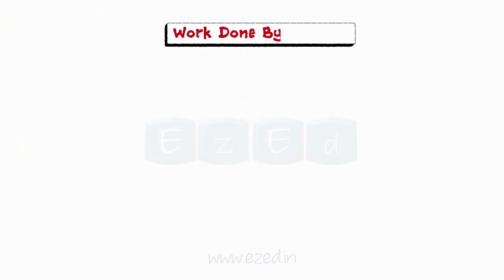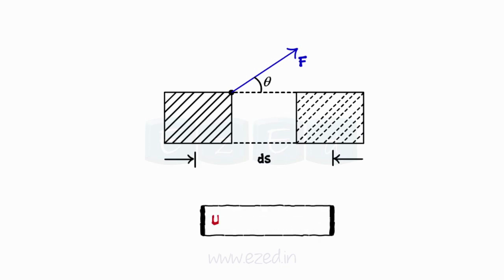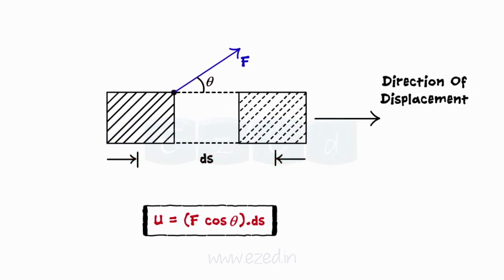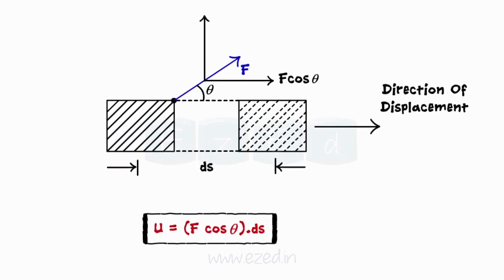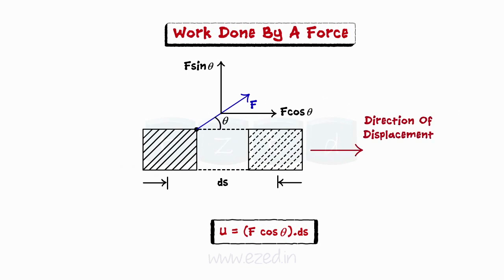Let us now learn about work done by a force. If a rigid body is subjected to a force F, which causes an infinitesimal displacement ds, then the work done U by force F during the displacement ds can be given by U equals F cos θ into ds, where θ is the angle between the direction of force and the direction of displacement. Thus, we can conclude that the work done by a force during infinitesimal displacement is equal to the product of the displacement and the component of the force in the direction of the displacement.